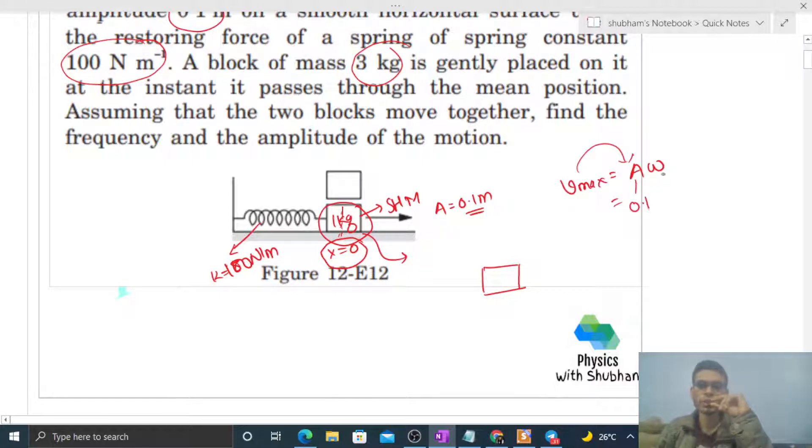Amplitude is 0.1 and omega will be under root of k by m. So k is 100 and mass is 1, so omega will be 10, and a times omega will be 1.